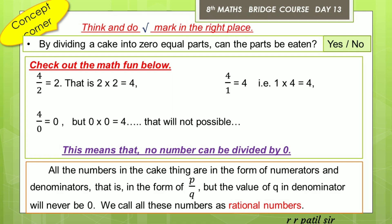Check out the math fun below. 4 upon 2 is equal to 2, because 2 into 2 equals 4. Similarly, 4 upon 1 is equal to 4, because 1 into 4 equals 4. Now, 4 upon 0 would require 0 into something to equal 4, but 0 into 0 is not equal to 4 — that is not possible. This means no number can be divided by 0.